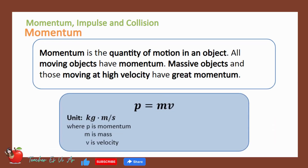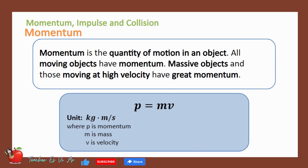Momentum is the quantity of motion in an object. All moving objects have momentum. It is denoted by the small letter P and can be expressed as the product of mass and velocity. Objects with greater mass and those moving at high velocity have great momentum.